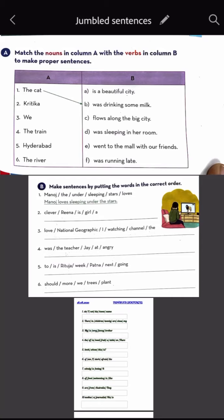Match the nouns in Column A with the verbs in Column B to make proper sentences. We have Column A which has nouns and Column B which has verbs. We have to match the verbs in Column B.